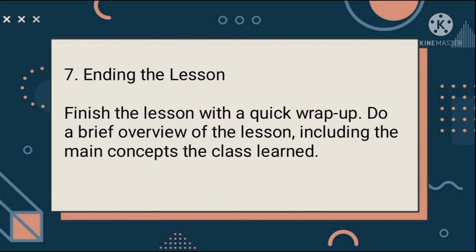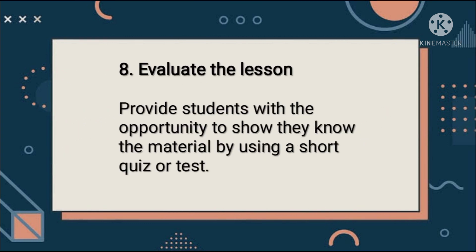Step 7: End the lesson. Finish with a quick wrap-up and a brief overview of the main concepts the class learned. Ask students to identify the key ideas as a refresher, and leave them with a preview of the next lesson so they know what to expect. Step 8: Evaluate the lesson. Did you achieve your learning objectives? Provide students the opportunity to show they know the material using a short quiz or test. Depending on the results, your next lesson plan may include a review before moving on to new material.